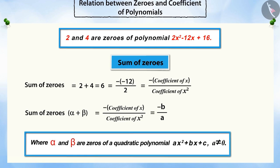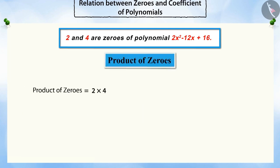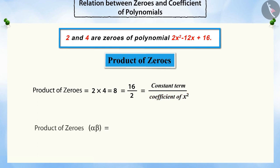Where alpha and beta are the two zeros of a quadratic polynomial AX squared plus BX plus C. Similarly, if we multiply the zeros, you will see that the product of the zeros is equal to the ratio of the constant term to the coefficient of X squared of the quadratic polynomial.